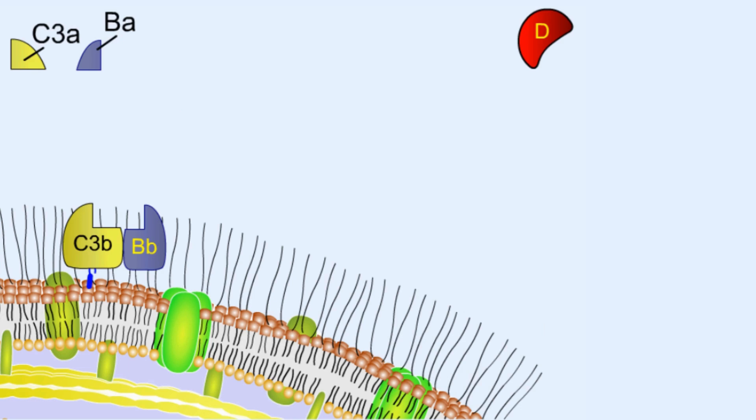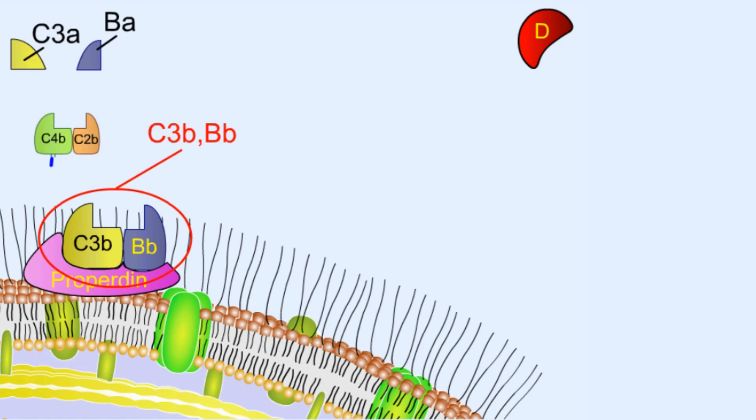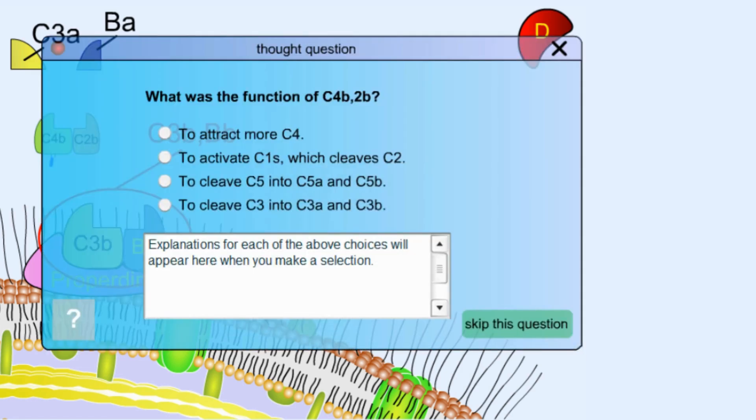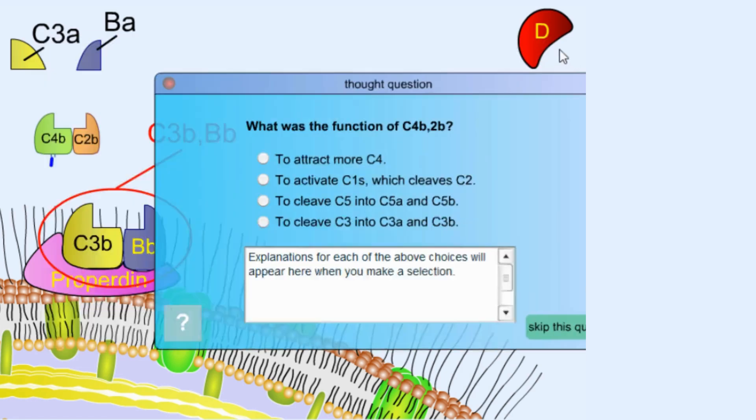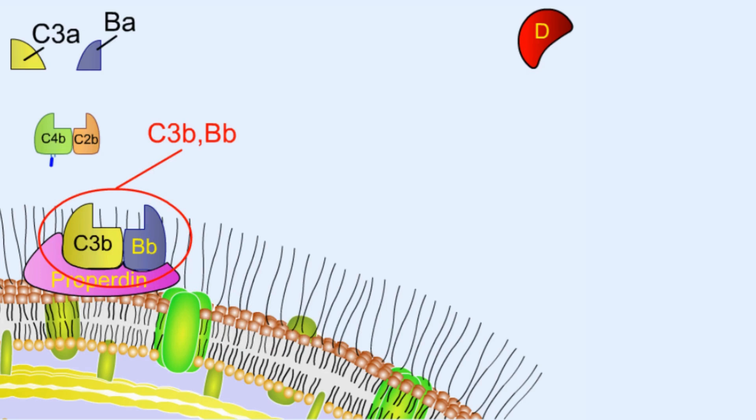By this same fashion, this C3B capital B small b complex acts as a C3 convertase. This complex is stabilized by another protein called properdin. So that is a stabilized C3Bb complex. It is a C3 convertase that resembles the classical pathway C4B C2B complex, which also is a C3 convertase. So once we produce this C3 convertase of alternative pathway by C3Bb,